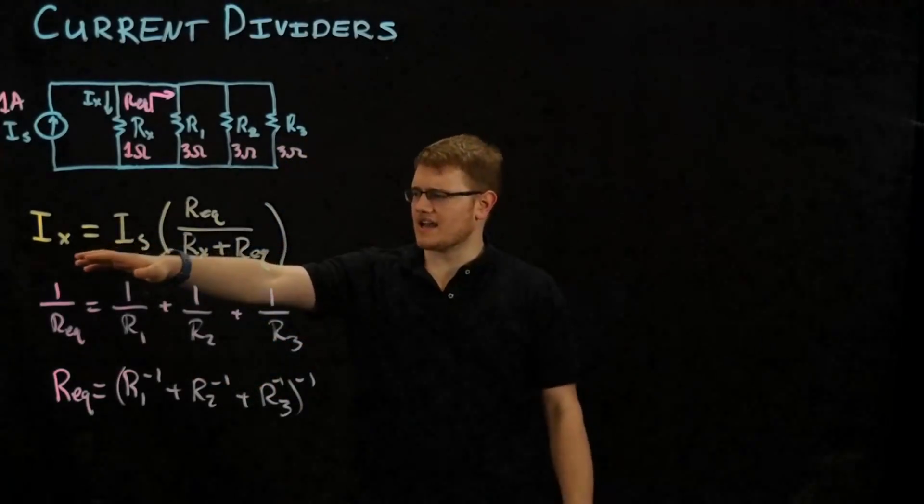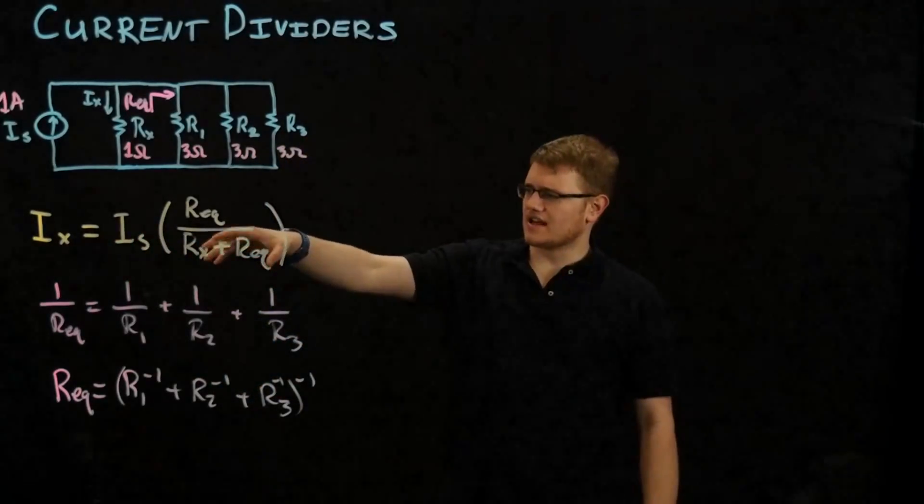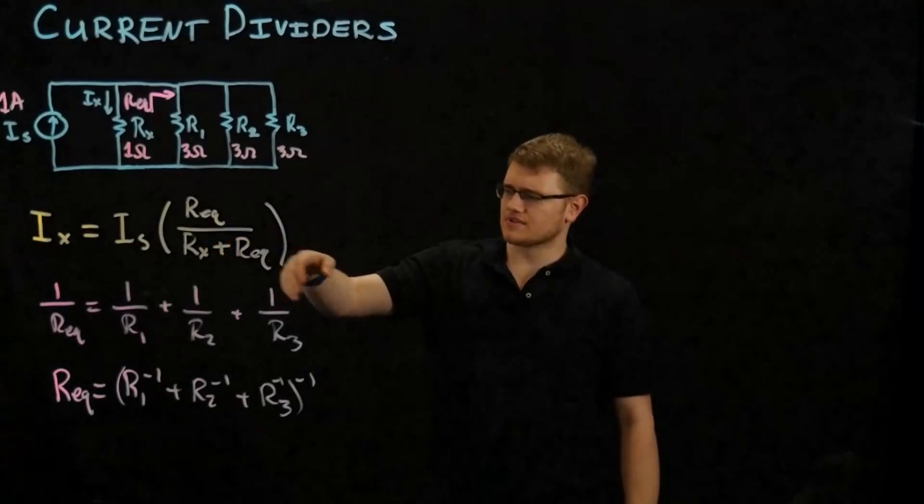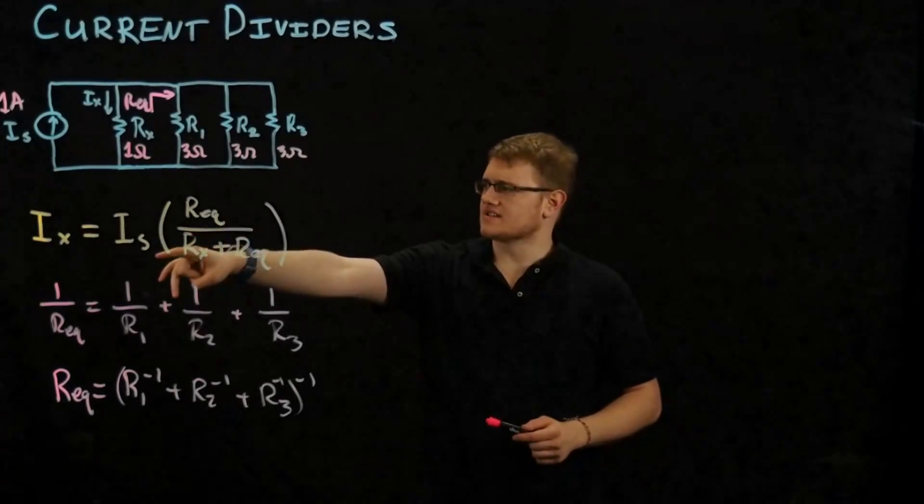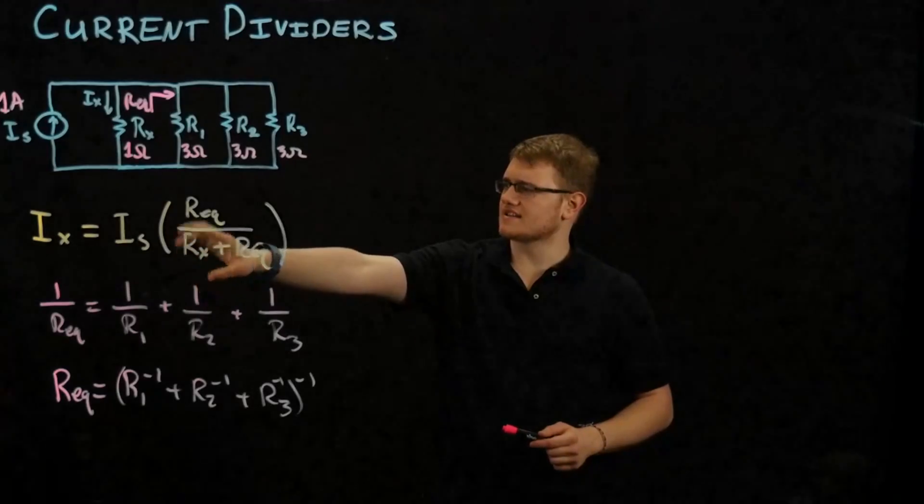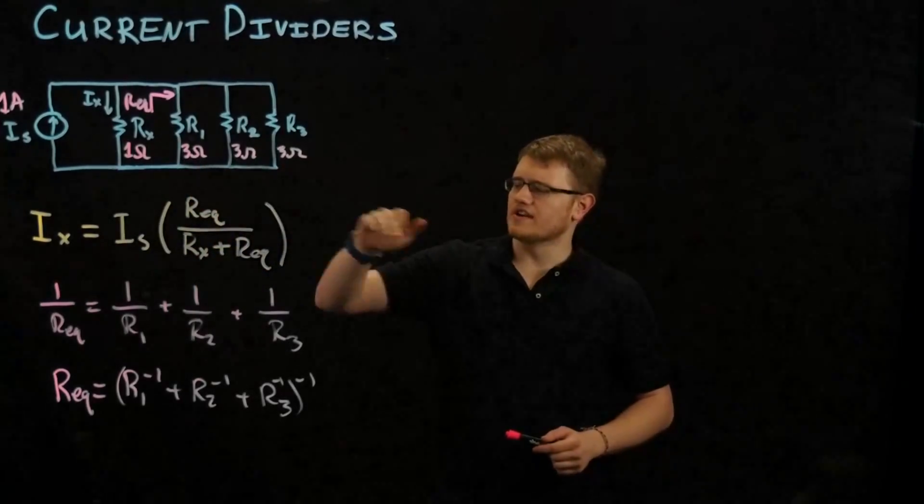So we see our formula: Ix equals Is times R equivalent over Rx plus R equivalent. So what can we do first? We know Is, that's one amp. We know Rx, that's one ohm. We need to find R equivalent.